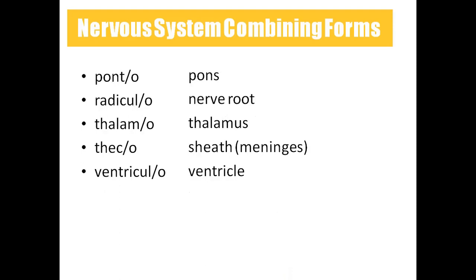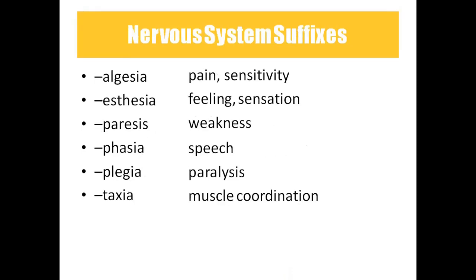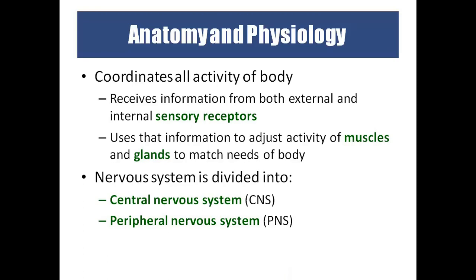Faso means speech. Polio means gray matter — for example, poliomyelitis means inflammation of the gray matter of the spinal cord. Ponto means pons, which means bridge and is a part of the brain. Radiculo means nerve root. Thalamo means thalamus, also a part of the brain. Tico means sheets or meninges. Ventriculo means ventricles — the spaces inside the brain. Coming to suffixes: algesia means pain or sensitivity, as in analgesia. Esthesia means feeling or sensation. Paresis means weakness. Fasia means speech. Plegia means paralysis. Taxia means muscle coordination.